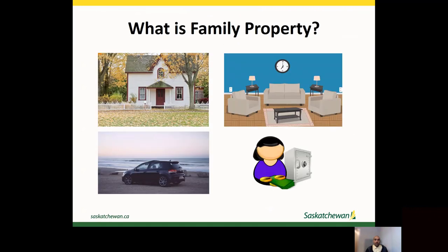Family property includes all types of property. This includes land and houses, which is often called real property. It also includes household furniture, vehicles, bank accounts, pensions, RRSPs, etc. The Act defines family property as property that either spouse owns or has an interest in at the time one or both of the spouses make an application under the Family Property Act. Family property also includes property that one or both spouses own or have an interest in, even if another person also owns or has an interest in it.